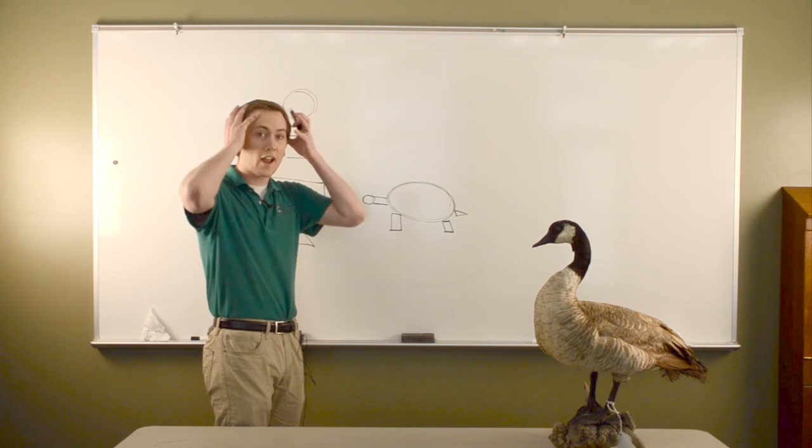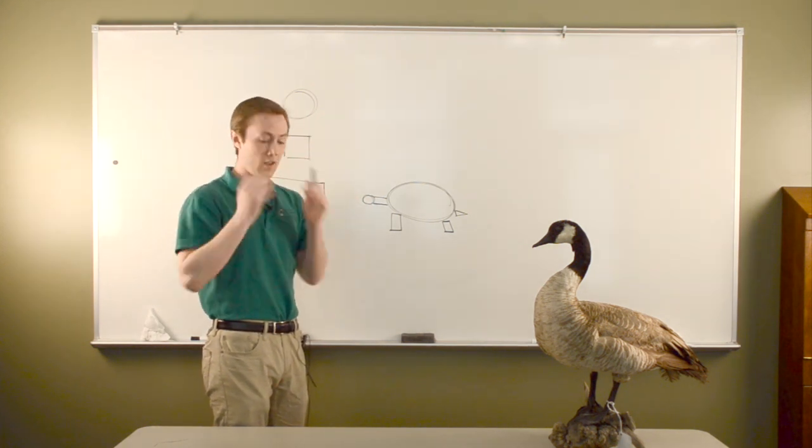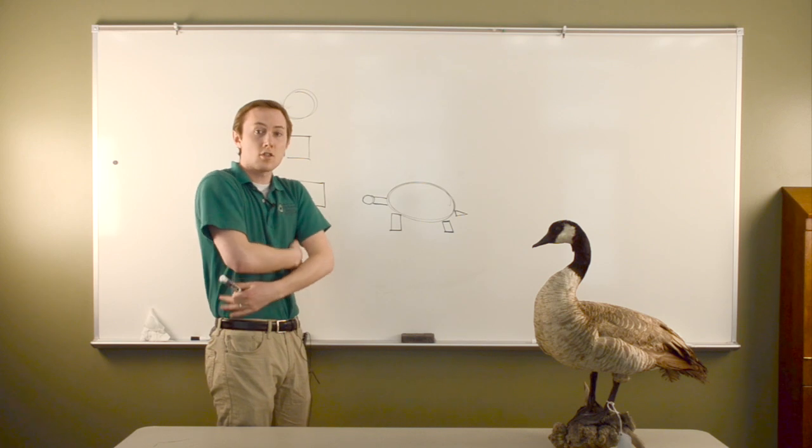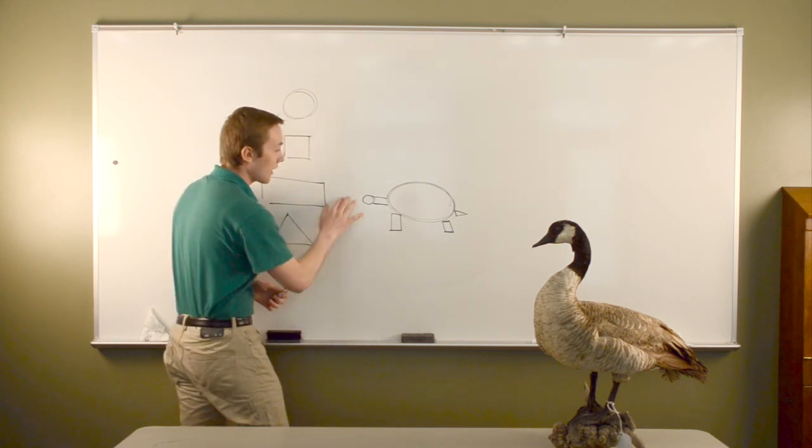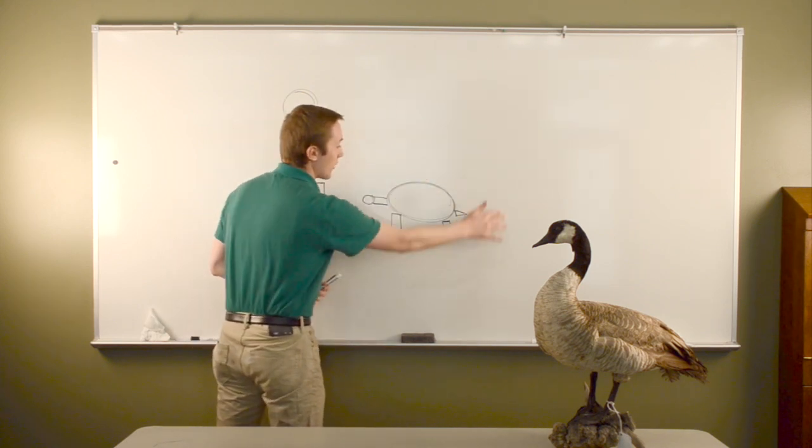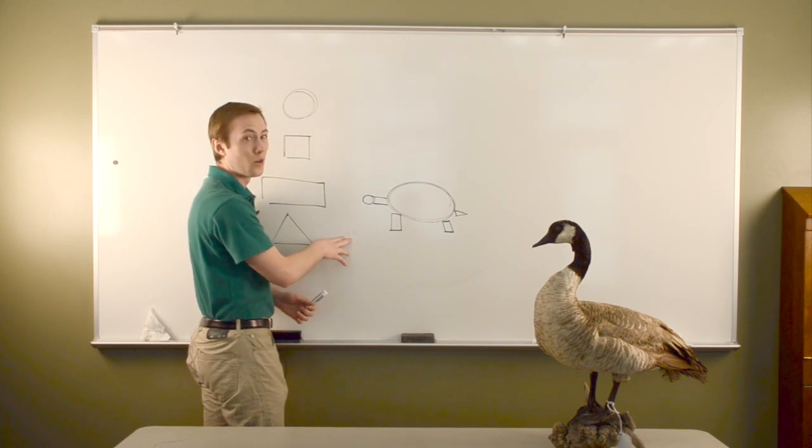Just like everything in the world is made of shapes. Even you're made of shapes. Your head is a nice circle. Your neck is a rectangle. Your body and torso is also a rectangle. So if we look at the shapes that things are made out of, it can make drawing them a whole lot easier.